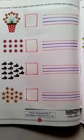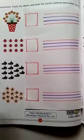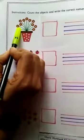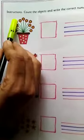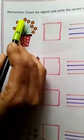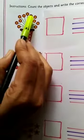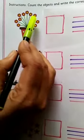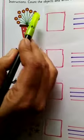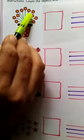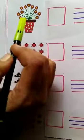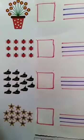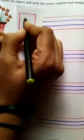First we will count the objects. 1, 2, 3, 4, 5, 6, 7, 8, 9, 10, 11. How many flowers are there? 11.